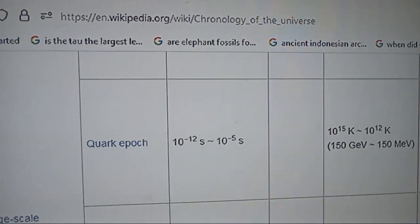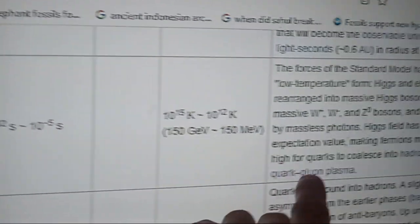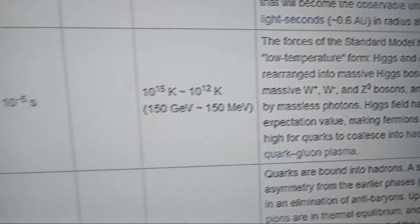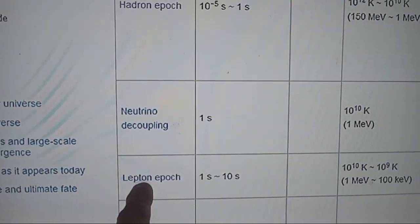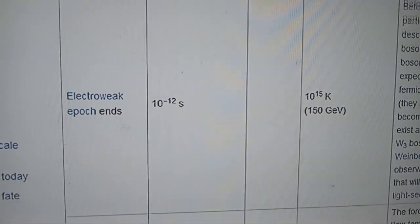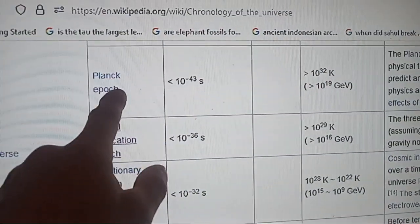They have the quark epoch here, which is the quark-gluon plasma—that's correct. But since everything came from leptons, the lepton epoch down here is supposed to be up here in the Planck epoch.